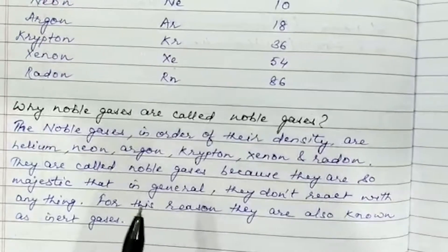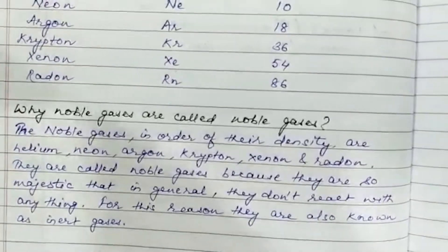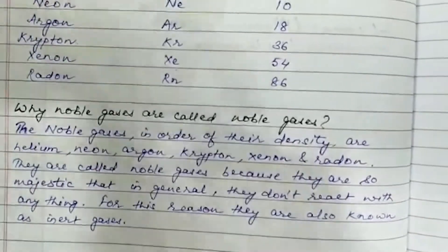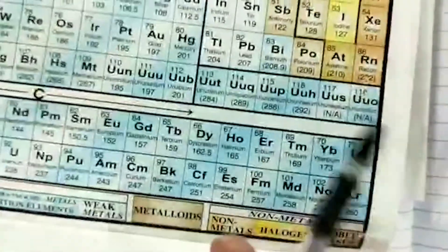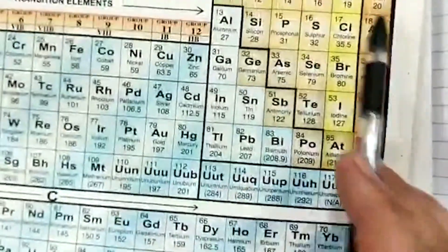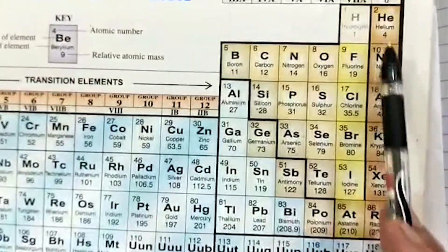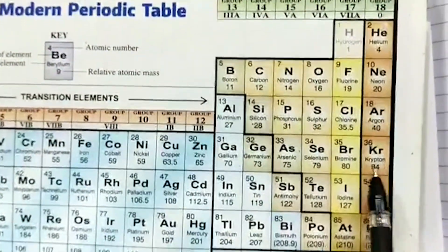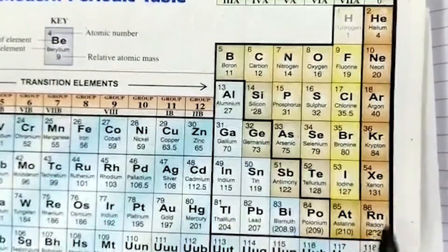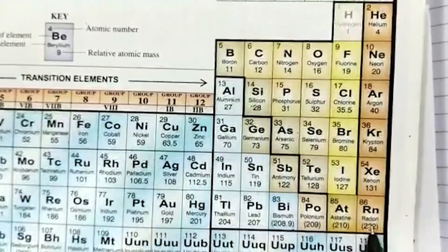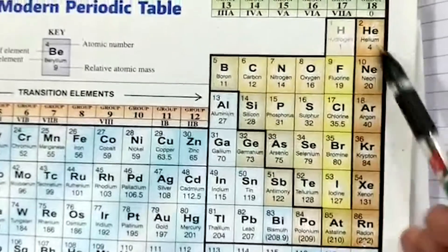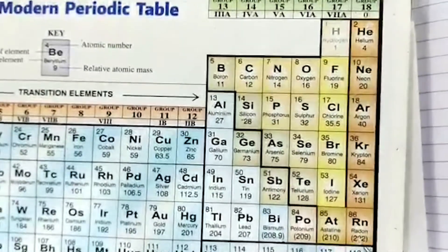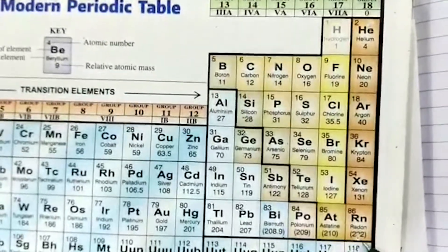If we look at the periodic table, Group 18 contains: Helium, Neon, Argon, Krypton, Xenon, and Radon — these are the noble gases.